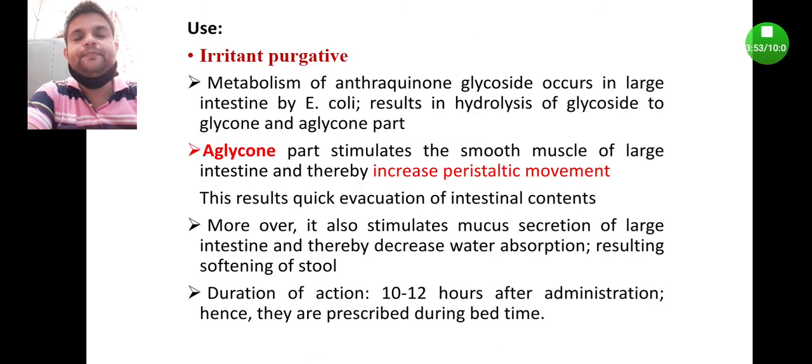Let us see its uses. Senna is used as an irritant purgative. The metabolism of anthraquinone glycoside occurs in large intestine by Escherichia coli. It results in hydrolysis of glycoside to glycone and aglycone part.